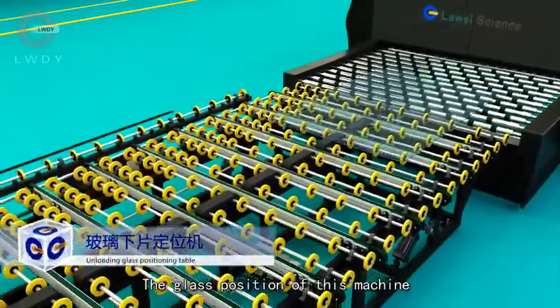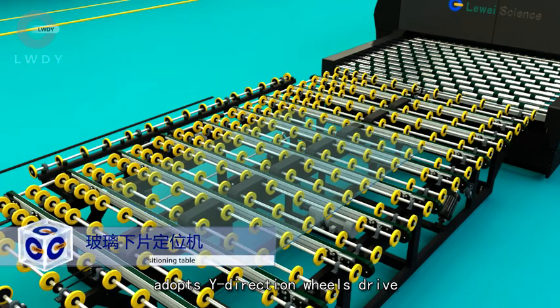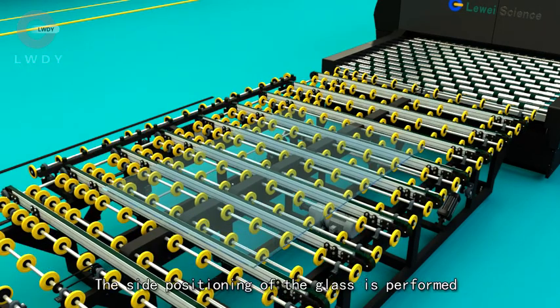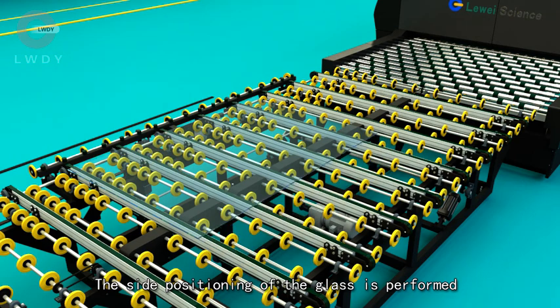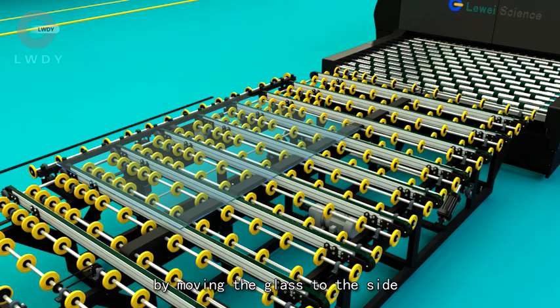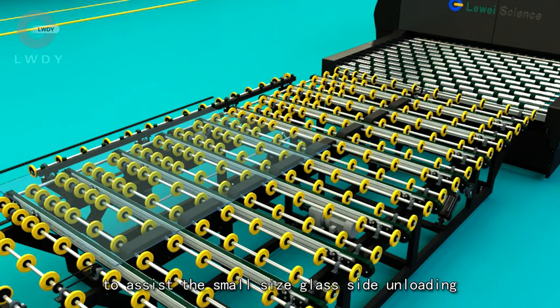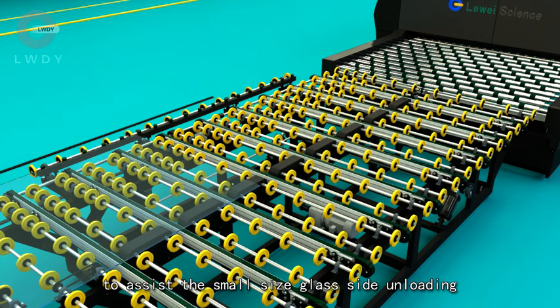The glass position of this machine adopts Y direction wheel drive and X direction synchronous belt drive. The side positioning of the glass is performed by moving the glass to the side with the synchronous belt. The machine is also equipped with side rollers to assist the small size glass side unloading.